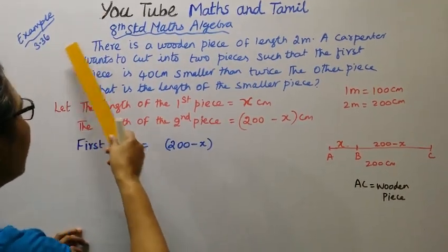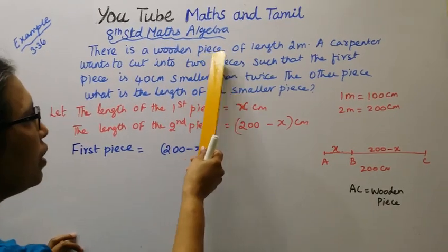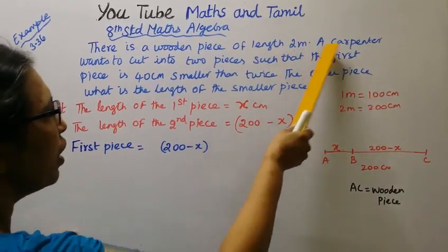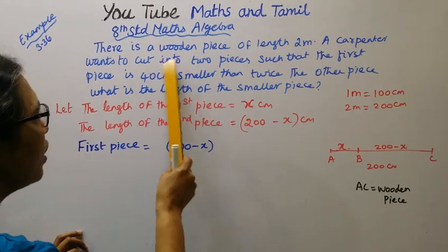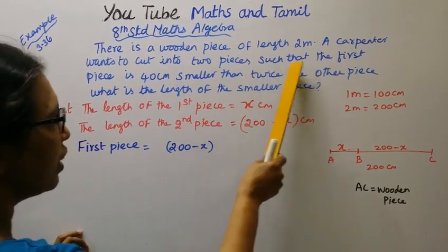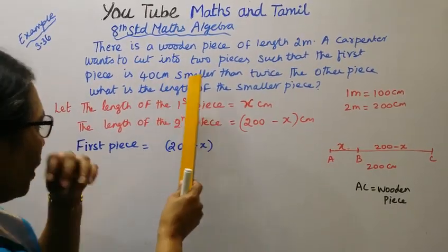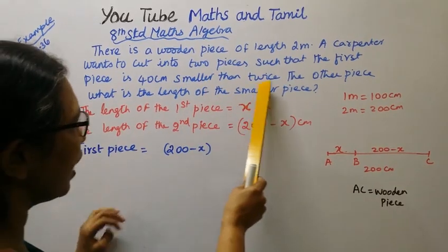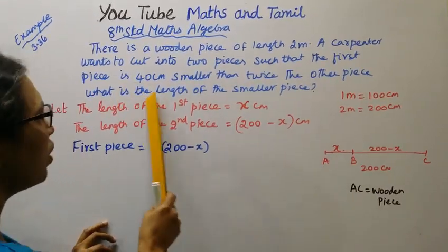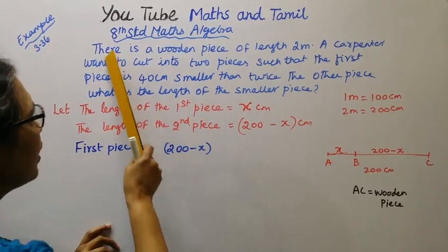Example 3.36: There is a wooden piece of length 2 meters. A carpenter wants to cut it into 2 pieces such that the first piece is 40 centimeters smaller than twice the other piece. What is the length of the smaller piece?